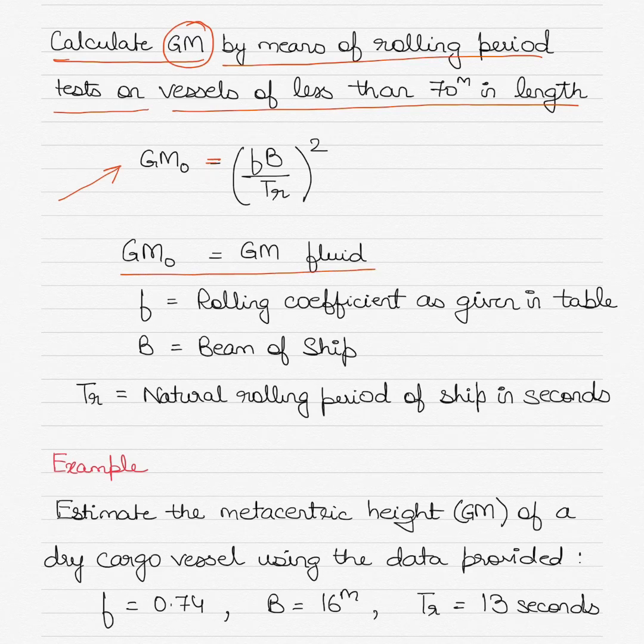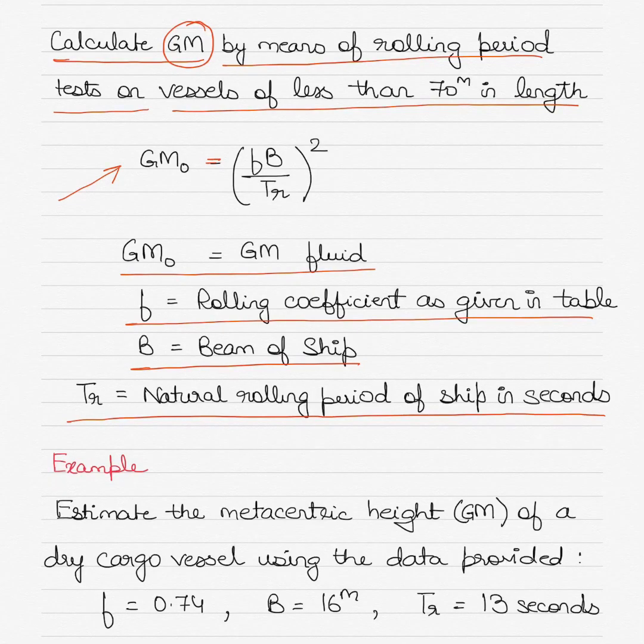GM fluid is the final GM obtained after correcting for the free surface effect. The letter f stands for rolling coefficient as given in the table, B stands for beam of the ship, and TR stands for the natural rolling period of the ship in seconds.